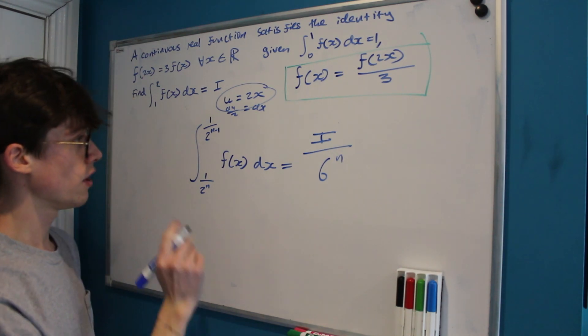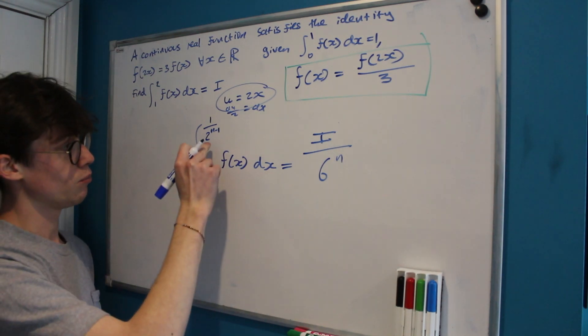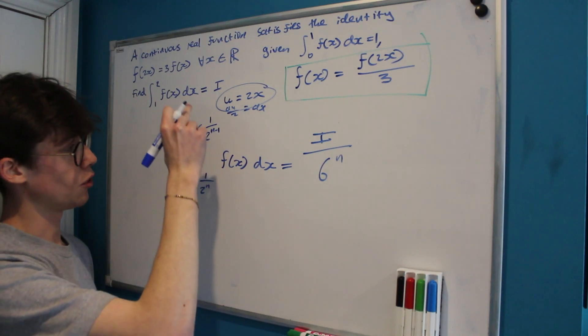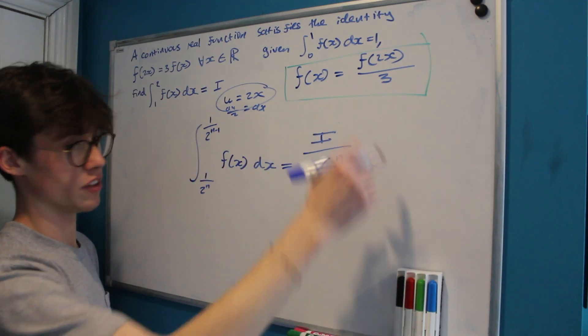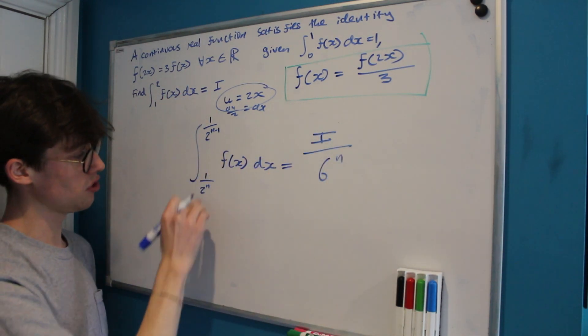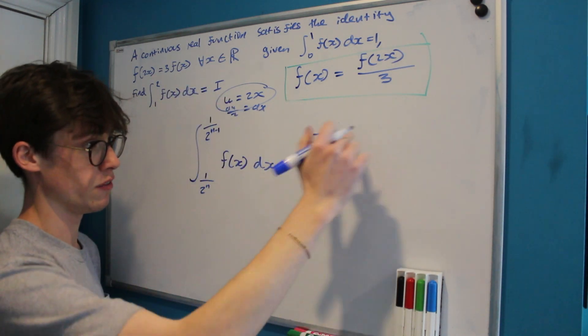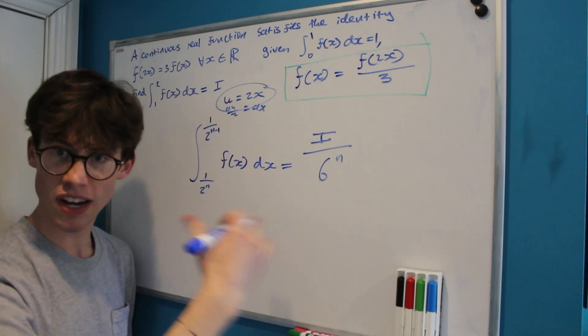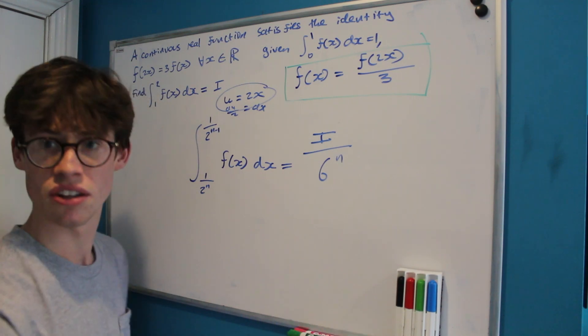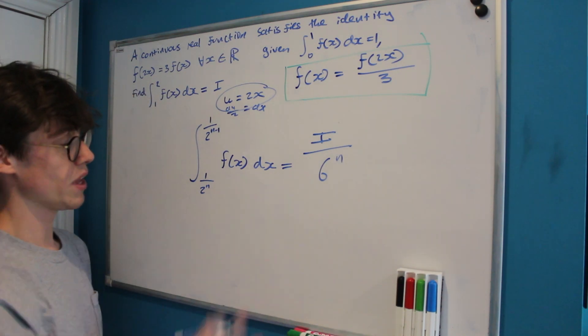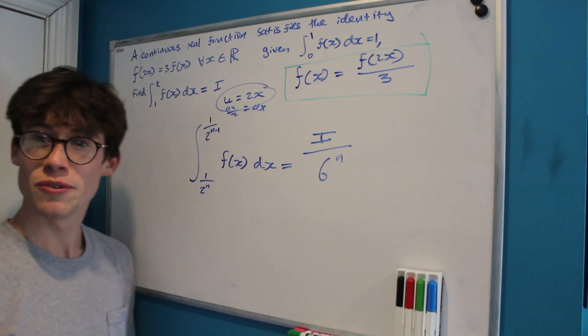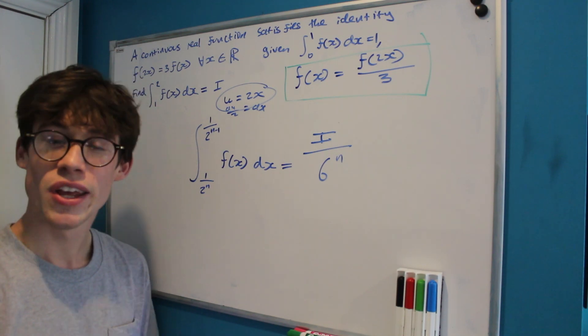Let's just check that that works. When n equals 1, that gives us the integral of half to 1 equals i over 6. That's correct. When n equals 2, a quarter to a half equals i over 6 squared. That's correct. So we've correctly captured this recursive nature of the problem here.